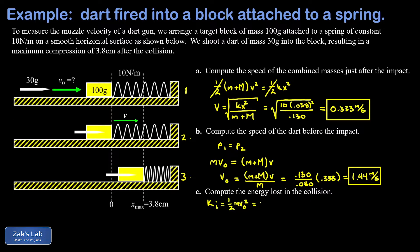That's one half little m V naught squared, so the mass of the dart, 0.030, initial velocity of the dart squared, so 1.44 meters per second all squared. When we run the numbers, we get 0.0311 joules.